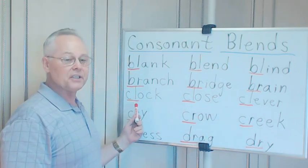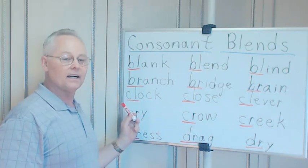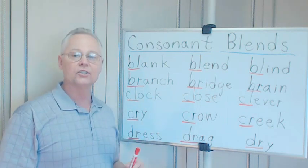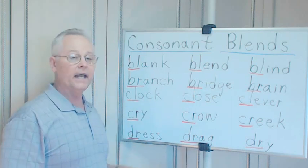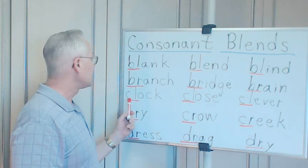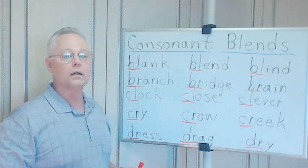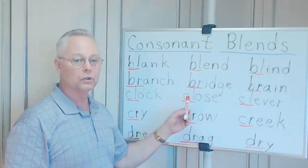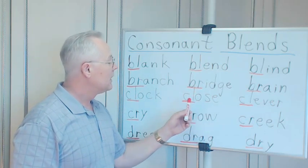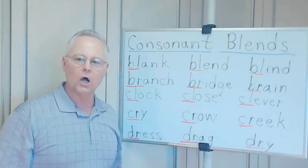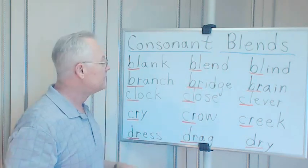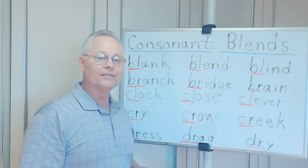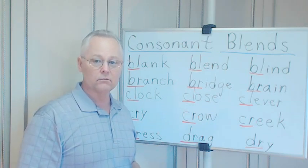Here we have CL, C 'cut', L 'la la', O-C-K, 'oh', CK is 'ack', 'cluck-ack', clock. The clock on the wall tells us the time of day. CL 'cluck'. Here we have close, like we're going to close the door, close the window, the store is closed. The O is long because of the E, the E gives it a long O sound.